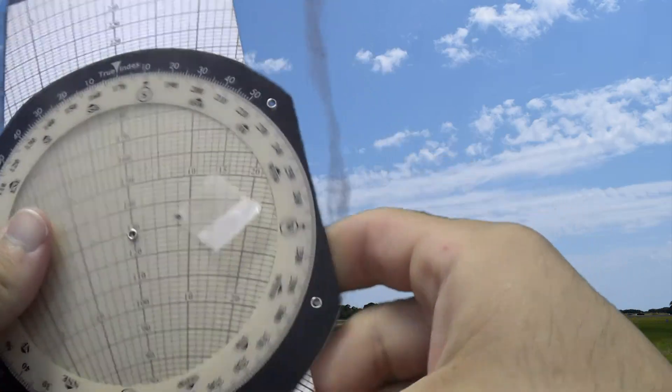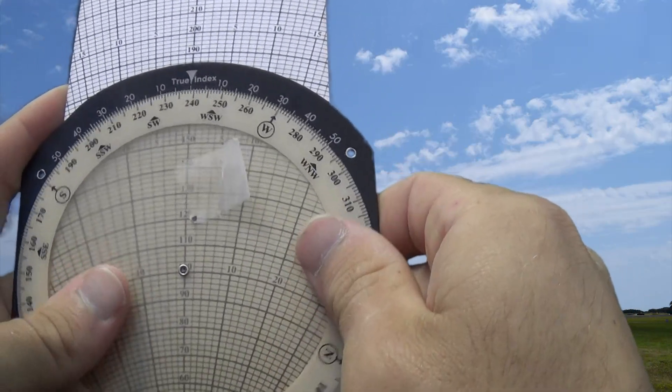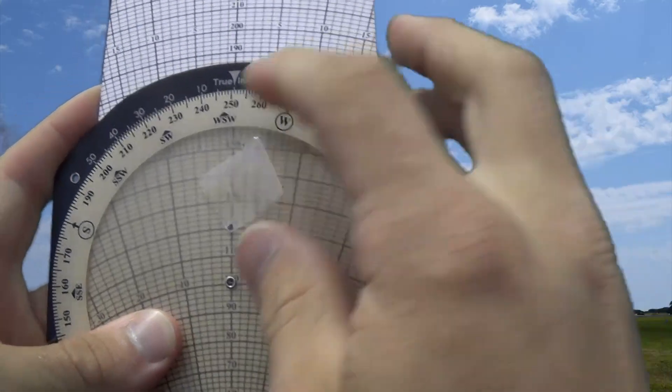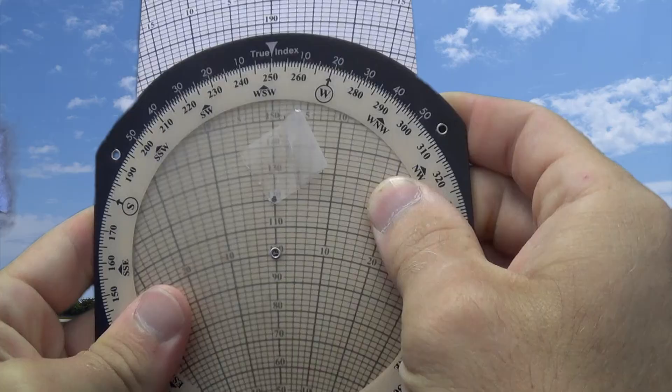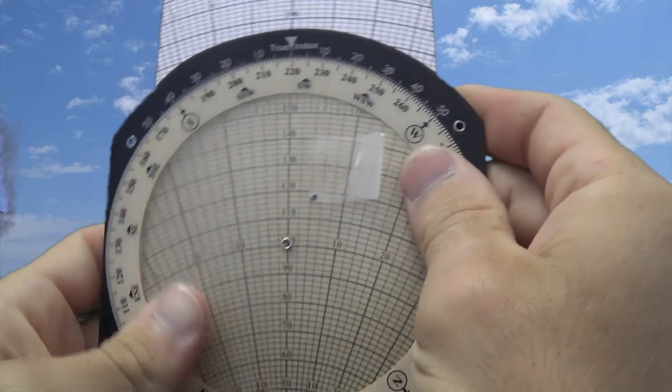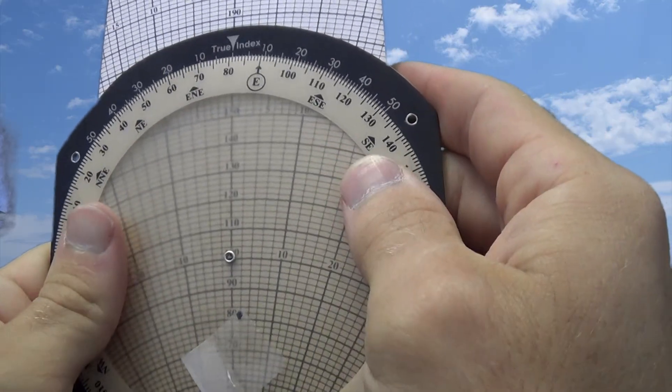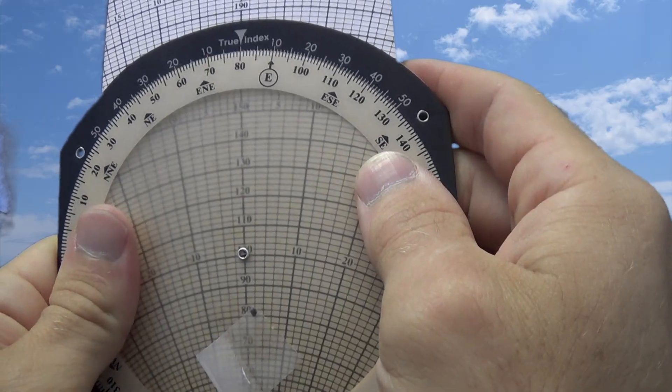What we did to do it once more, we started at 100, nice round number. Our winds were 250 at 18. So we dialed up 250, went to 18 there, and then we went ahead and dialed in what our true course was going to be that we drew on our sectional, which was 080.